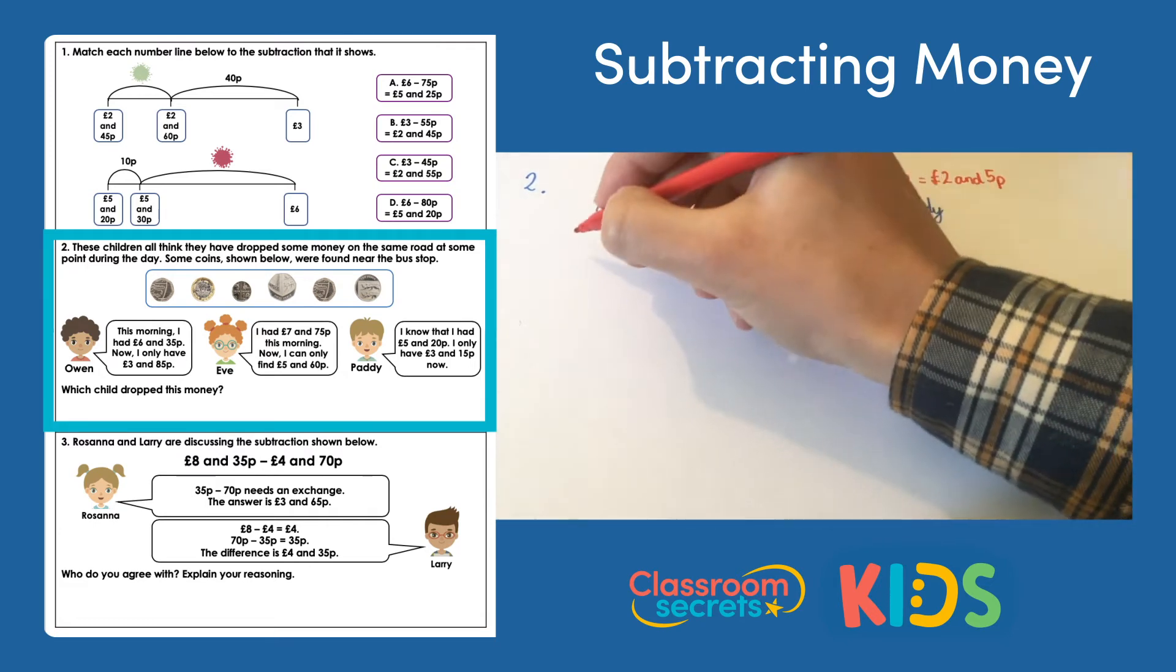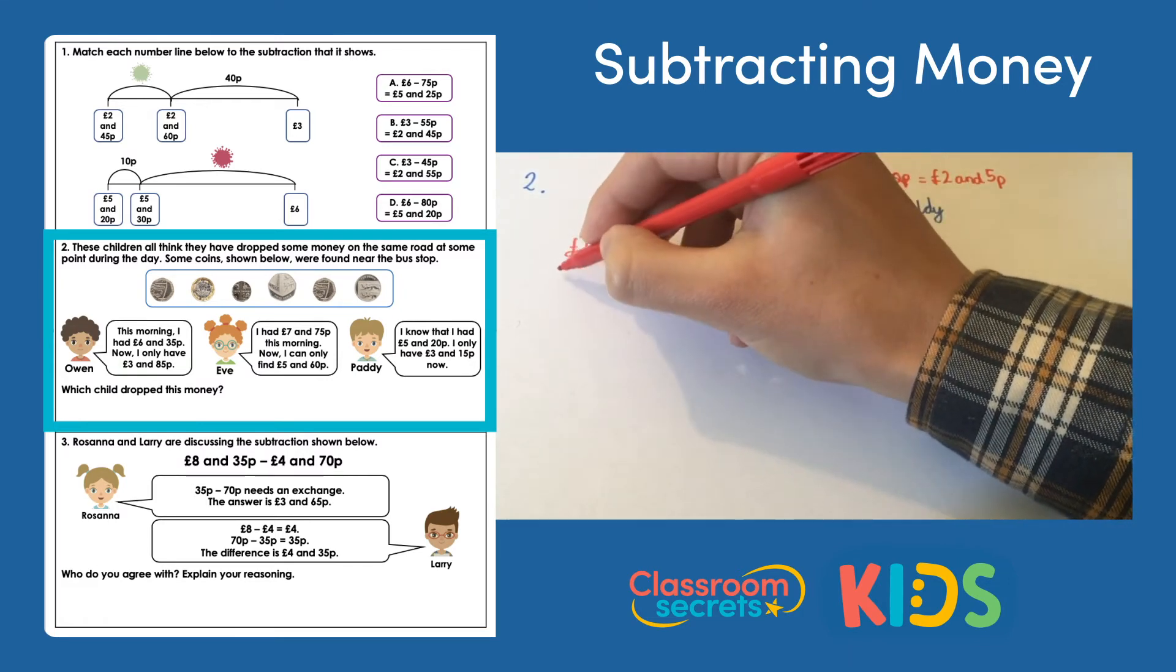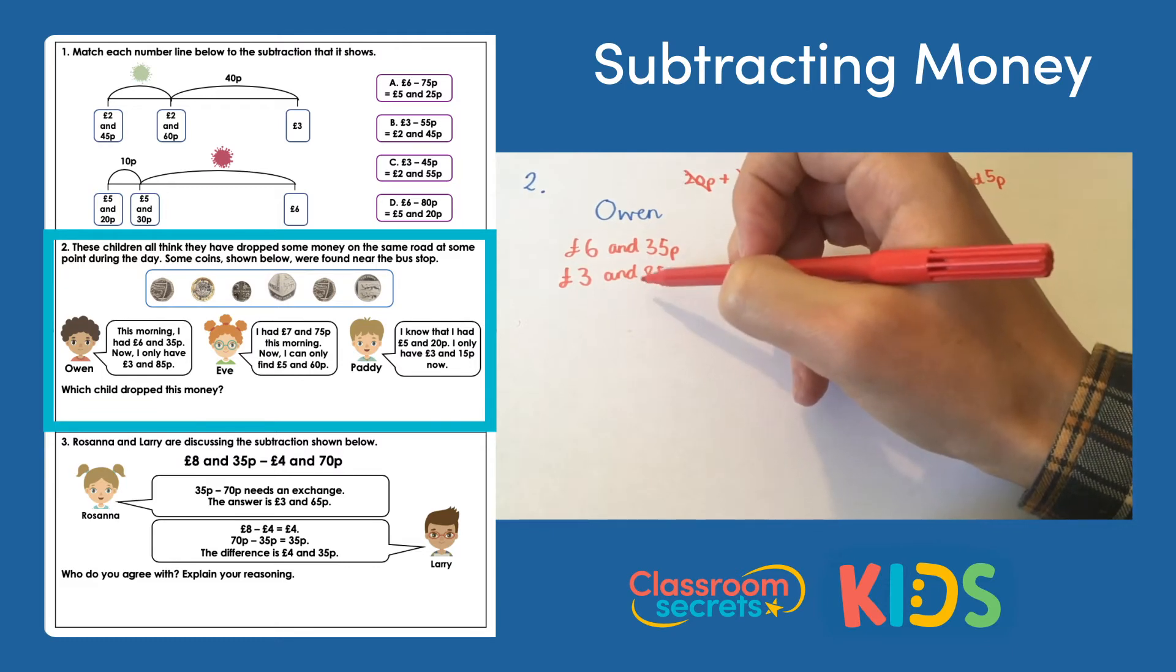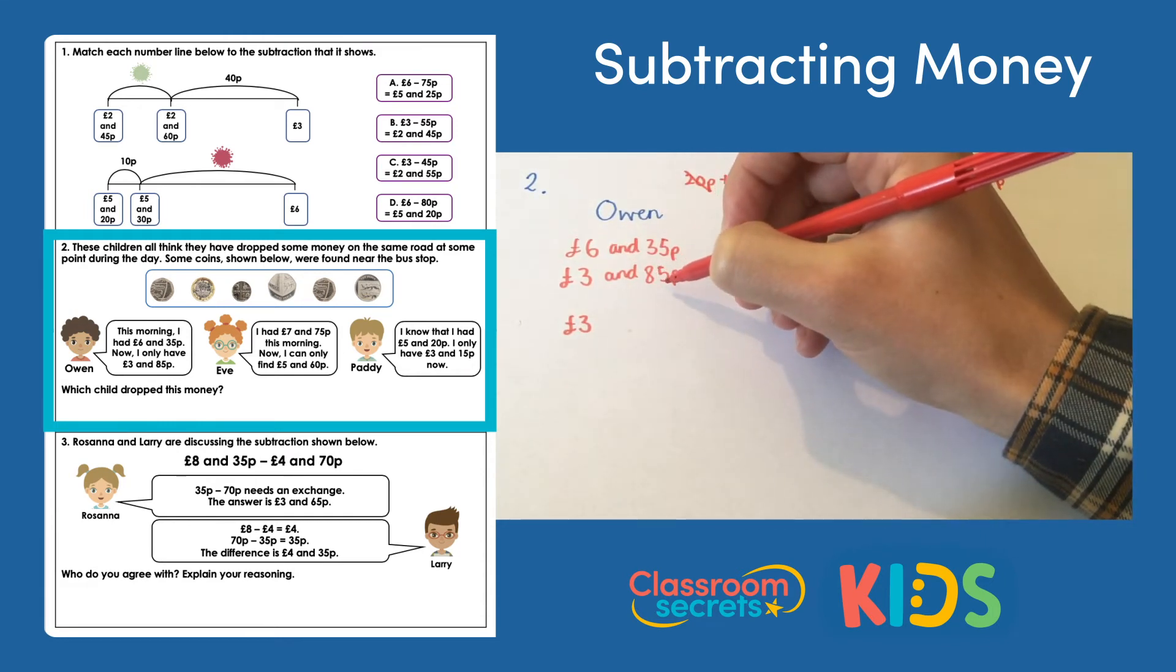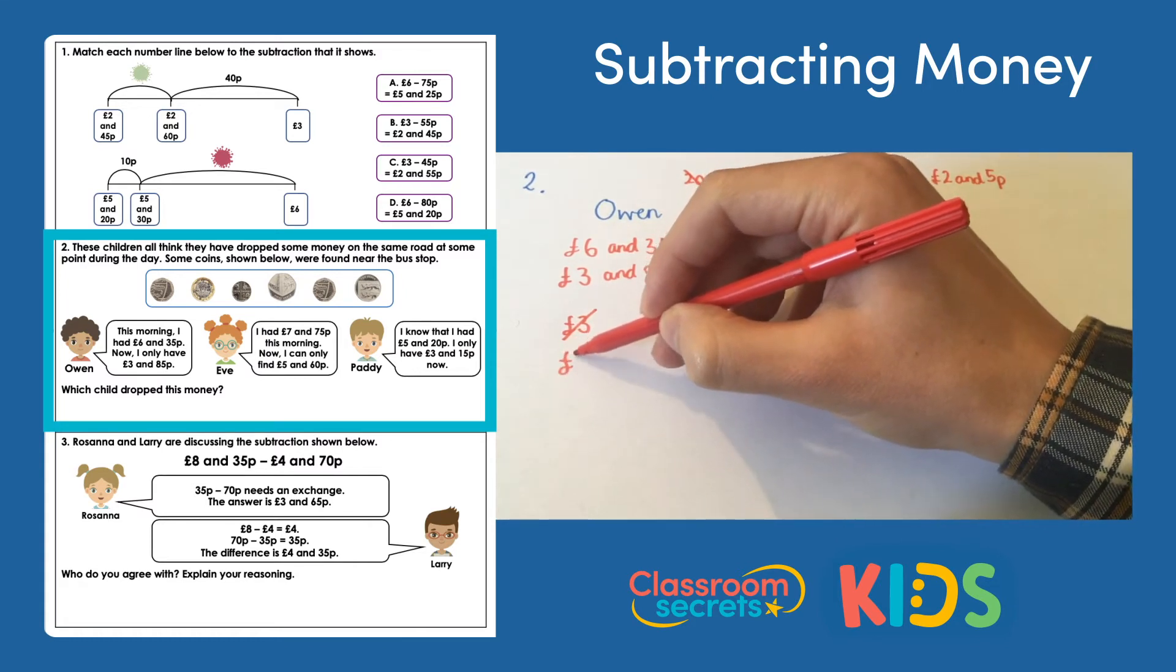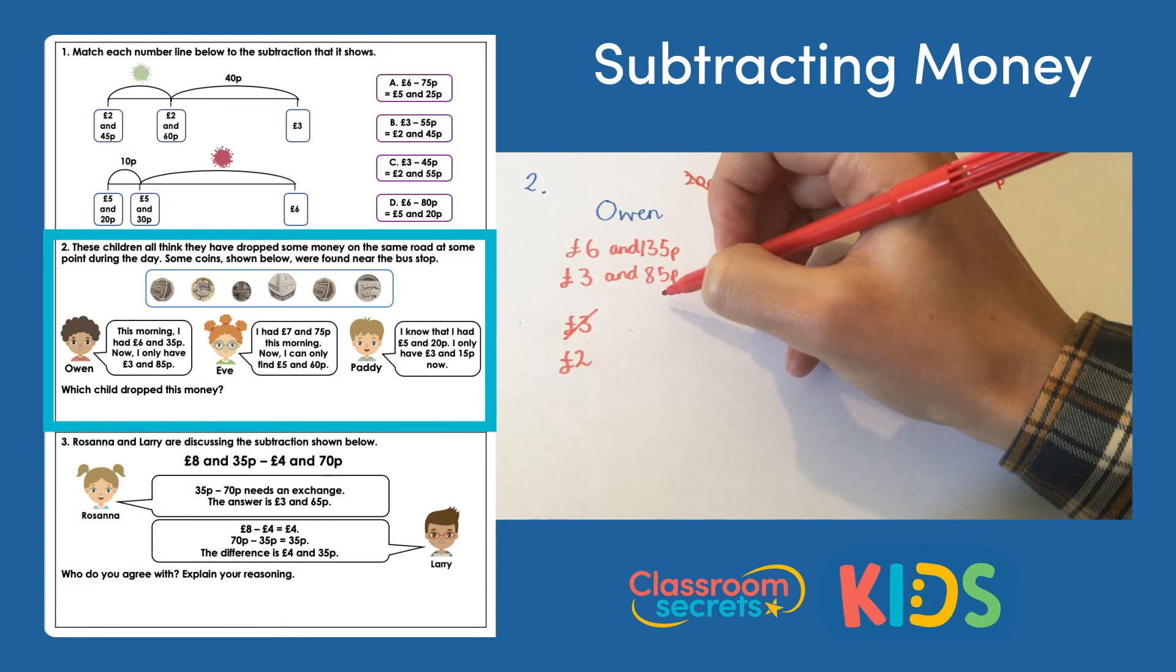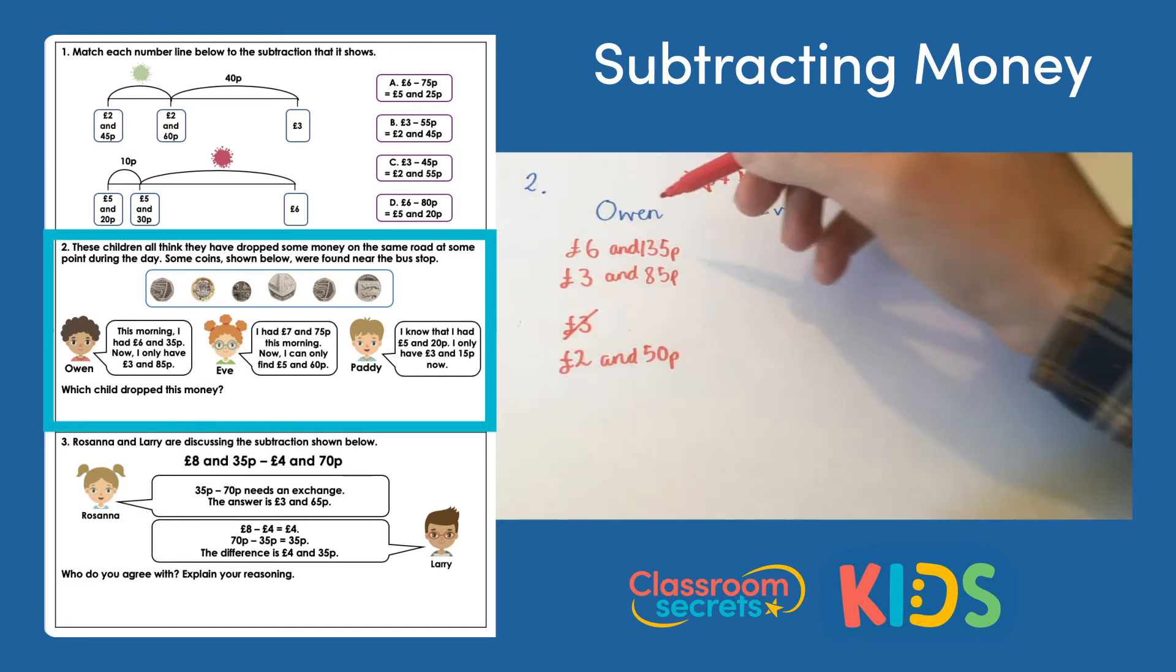Let's have a look then at how much each child has left. If we find out the difference is two pounds and 5 pence, that will be the child that's lost that much money on the road. So Owen, he had six pounds and 35 pence and now he only has three pounds and 85 pence. You can use your number line to count up or count back, but I'm going to do it the taking away the pounds way first, and then if we need to exchange pounds for pence we can do. So six take away three pounds leaves us with three pounds. Then 35 pence take 85 pence I can't do, so I need to swap or exchange one of my pounds left. That leaves me with two, and then that pound turns into a hundred pence. So then I can have 135 take away 85, and 135 take away 85 is 50p. So then I have two pounds and 50p left over. We're looking for two pounds and 5 so it can't be Owen.